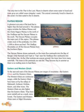The only river in the Thar is the Luni. Places in the desert where some water is found and trees grow are called oases. Oases means a small fertile or green area in a desert. The animals commonly found in the desert are best suited to live there.